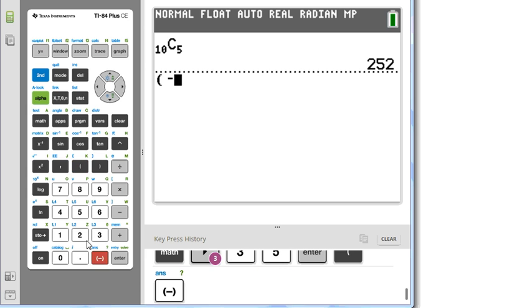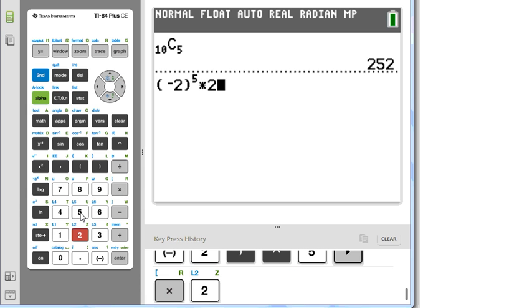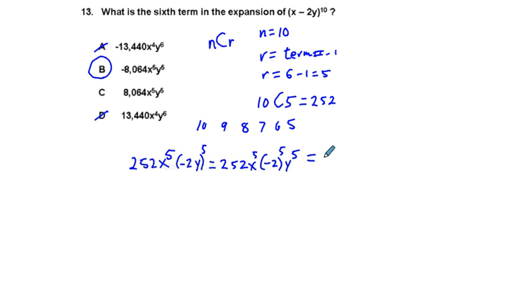So negative 2 to the fifth power times 252. We get negative 8,064. And so our correct answer is B.